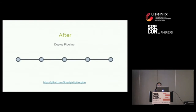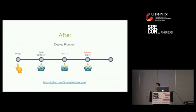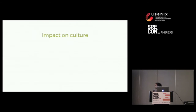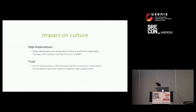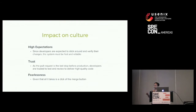So with that in mind, we updated our pipeline. You still have the developer merge their code into master, kick off a container build and a CI run, and then ShipIt now takes care of deploying the code when it's ready. This happens at a configurable batch size at a configurable rate, and it all goes into production. This had a few impacts on our culture: the first being high expectations, since developers are expected to stay around so our system has to be fast and reliable. The second is trust — we put a lot of trust in our developers to ship production-ready code. And finally, fearlessness: instead of being scared to click deploy on a batch of code, you are now owning your code when you hit the merge button.